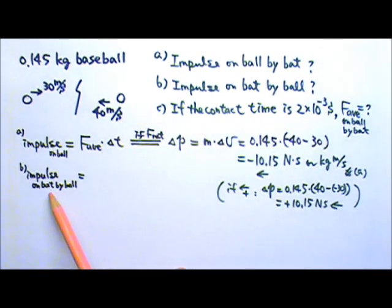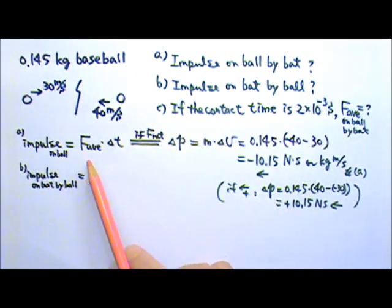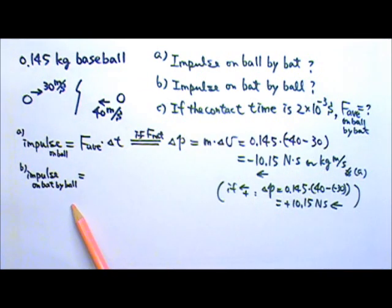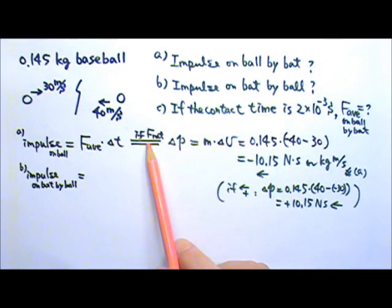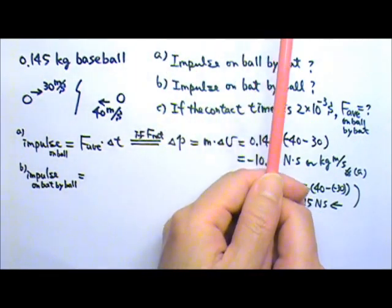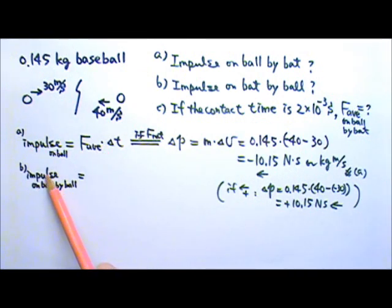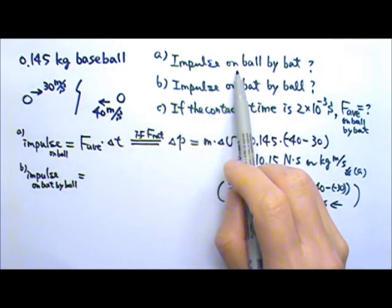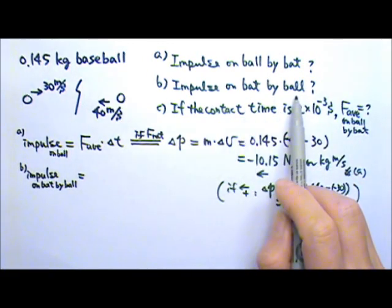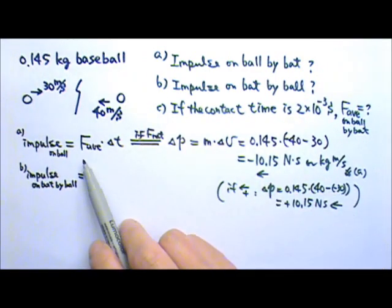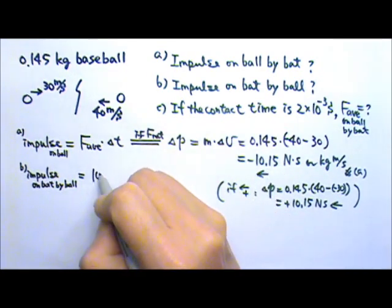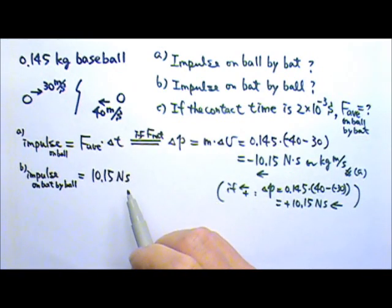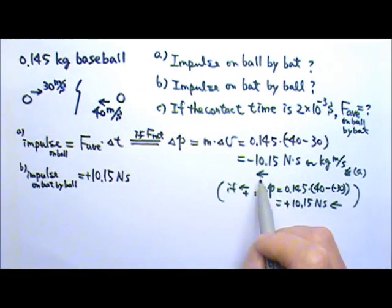For part B, we want to find the impulse on the bat by the ball. We do not have information about the changing momentum of the bat, and the force on the bat by the ball is not the net force on the bat because someone is holding and swinging it. However, during contact, the force on the ball by the bat and the force on the bat by the ball are a pair of equal and opposite action-reaction forces. This means the impulse on the bat by the ball is the same amount — 10.15 newton-seconds — but in the opposite direction, so it is positive and to the right.